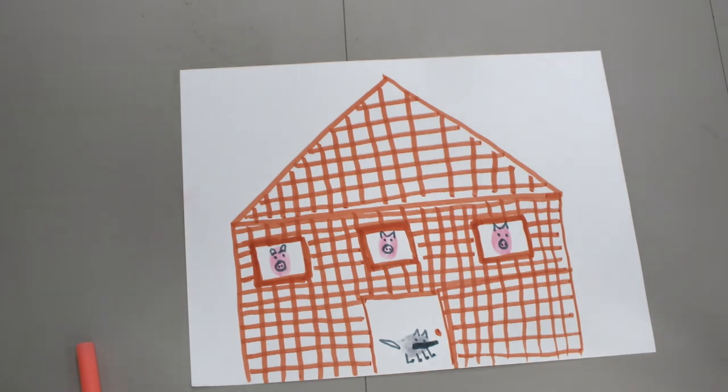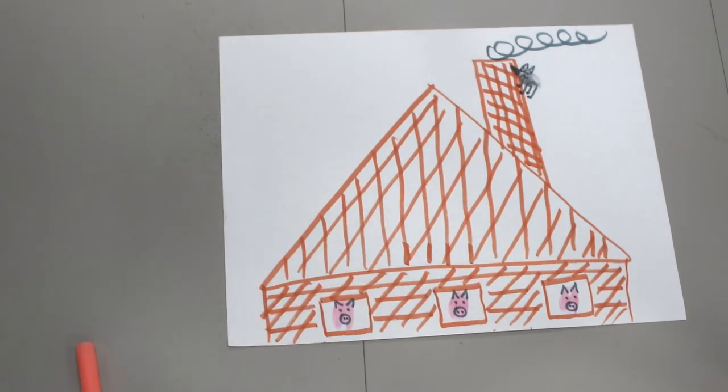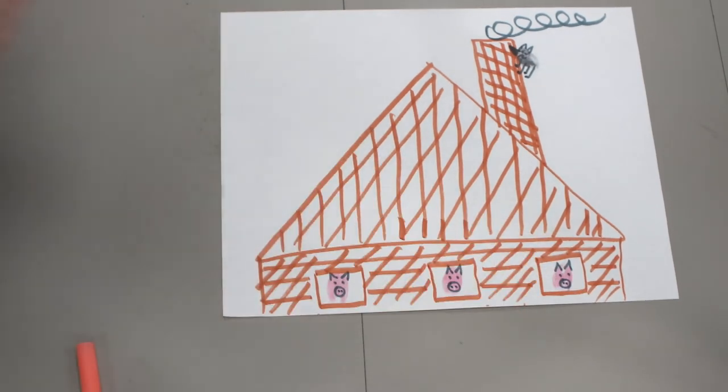But what did he see? He saw that on the back side of their house there was a chimney. And he decided that he was going to crawl up the side of the house and go in through the chimney. Well, what he did not realize was that the three little pigs had started a fire in the fireplace.